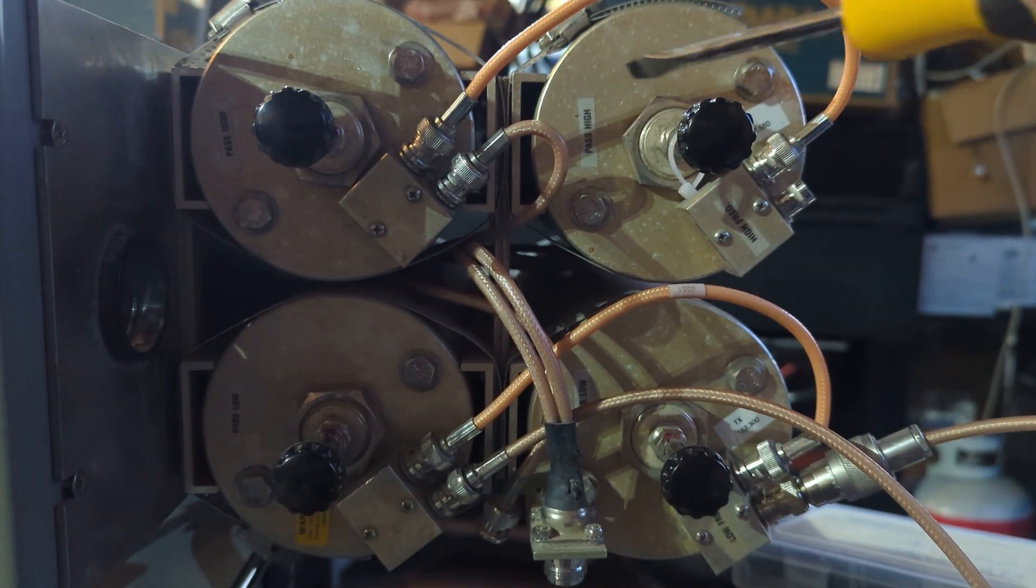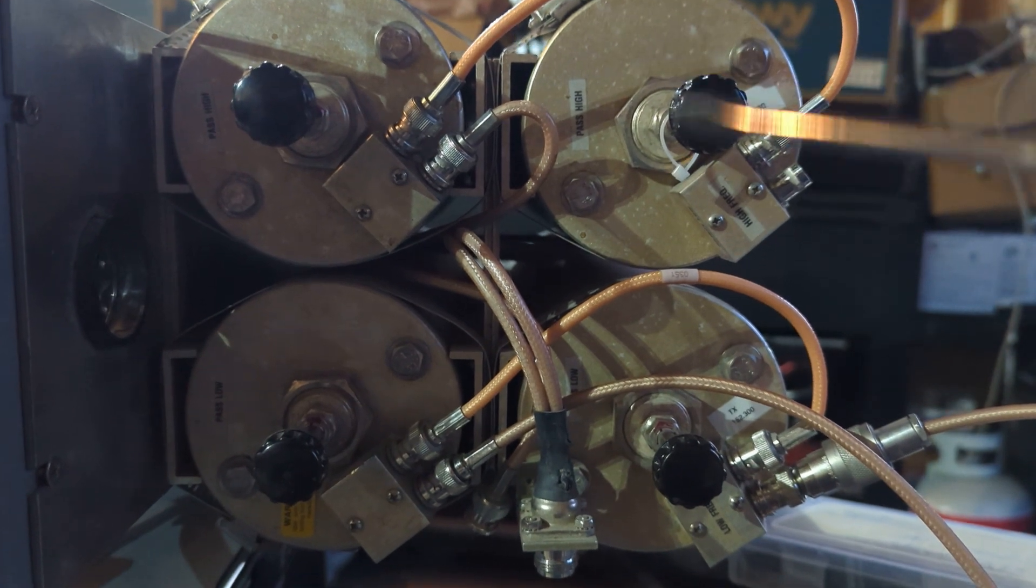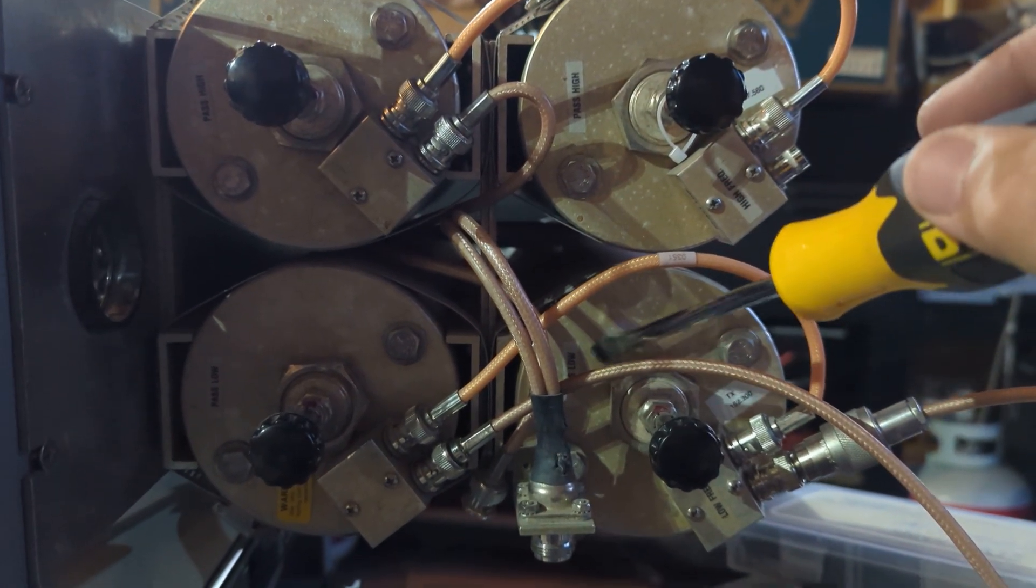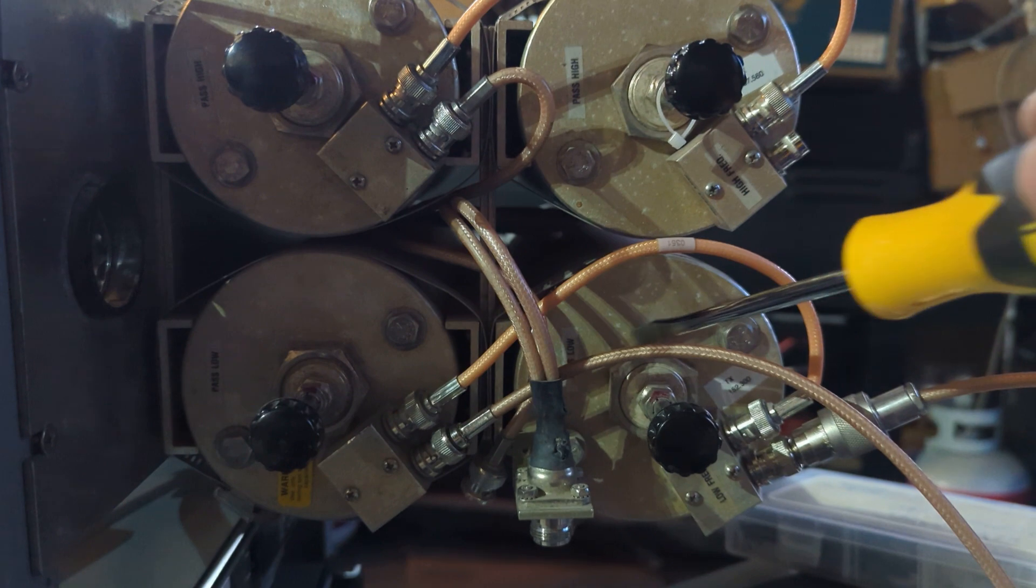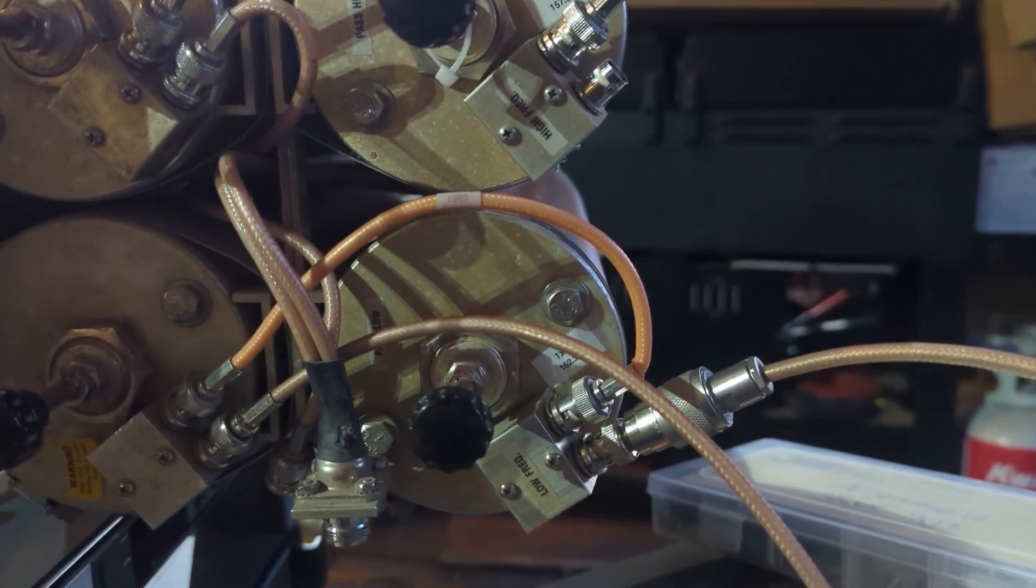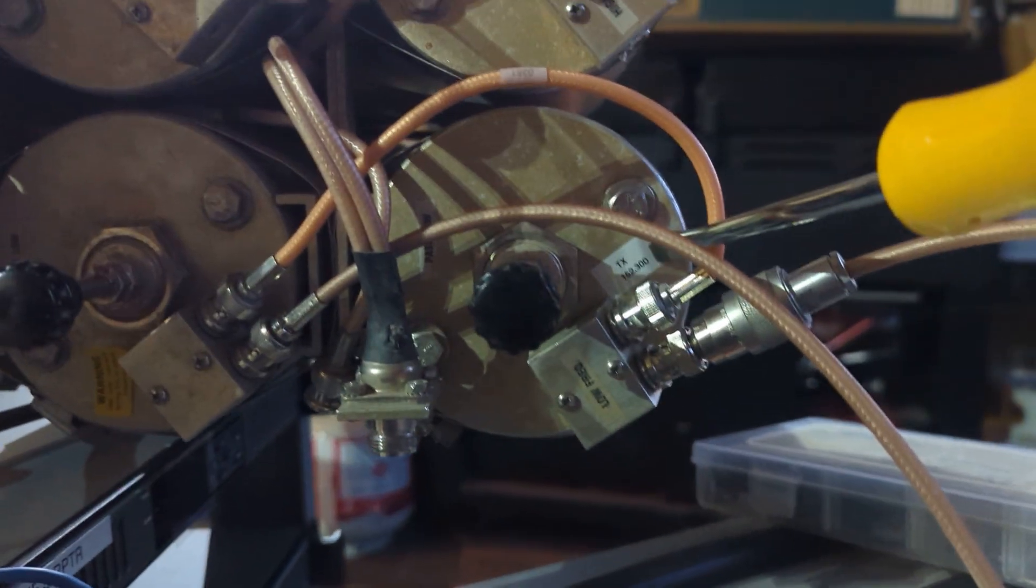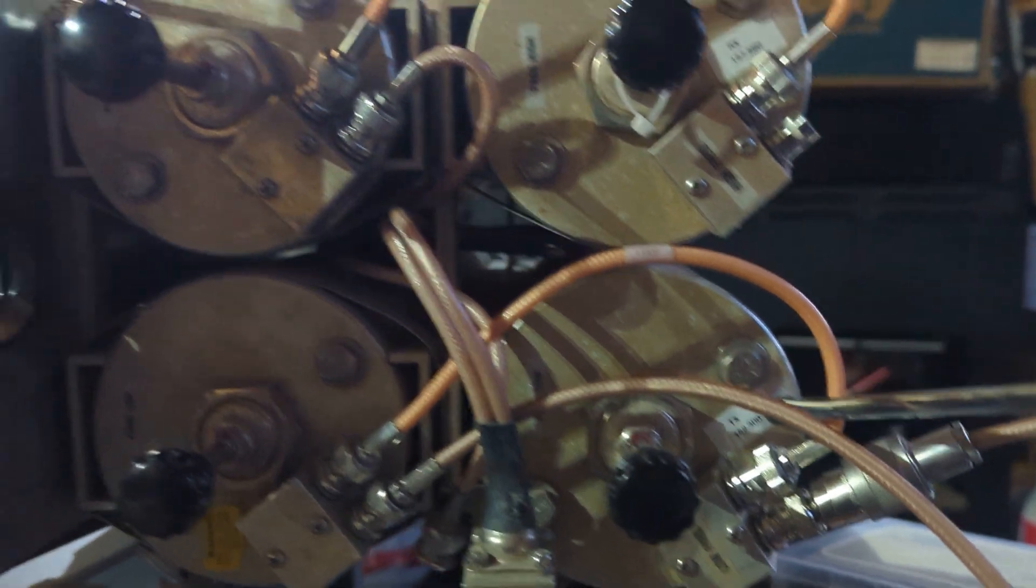So in this case the pass high is going to pass the upper frequency and the pass low is going to pass the low frequency. So for this I'm going to be using 157560 and then the transmit side is going to be 152300.